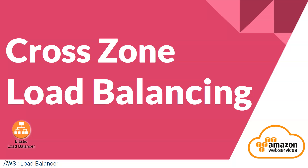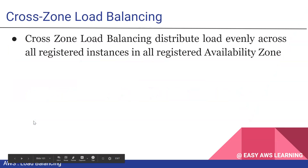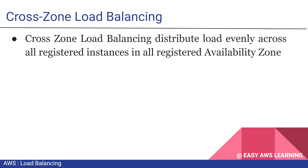So let's now talk about cross-zone load balancing. When cross-zone load balancing is enabled, each load balancer instance will evenly distribute the traffic across all registered availability zones. All instances registered with the load balancer in all availability zones will receive traffic distributed across all registered EC2 instances.